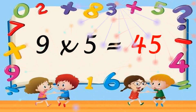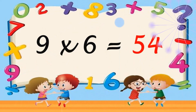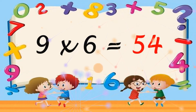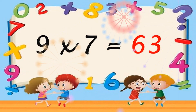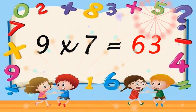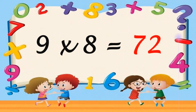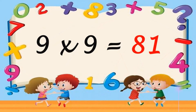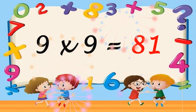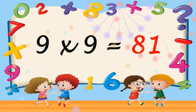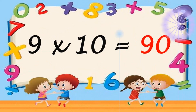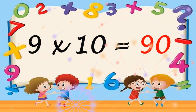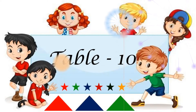9 6s are 54. 9 7s are 63. 9 8s are 72. 9 9s are 81. 9 10s are 90. Coming to the next table.